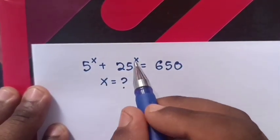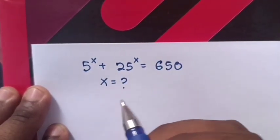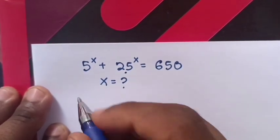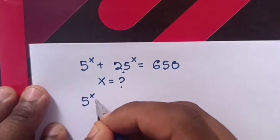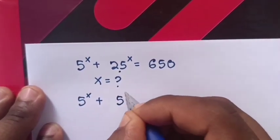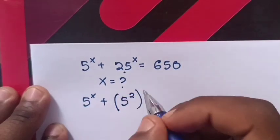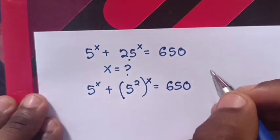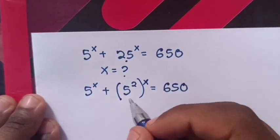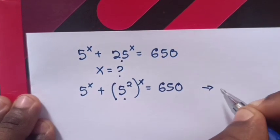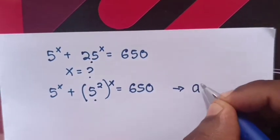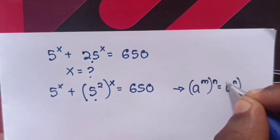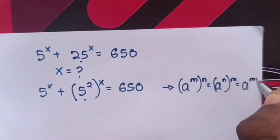To solve 5^x + 25^x = 650, find the value of x. Since 25 is the same as 5², we can write 5^x + (5²)^x = 650. We'll apply the exponential rule that (a^m)^n = a^(mn).